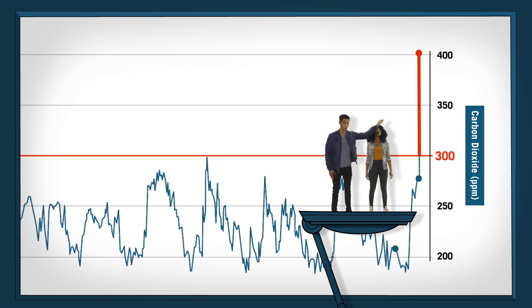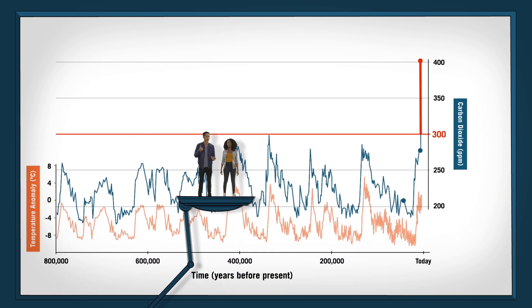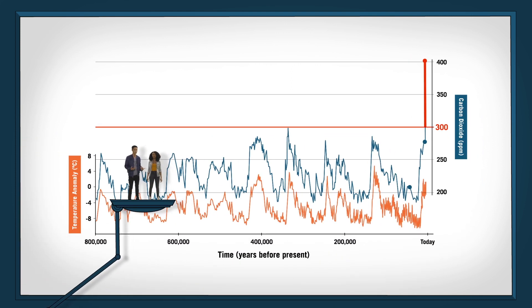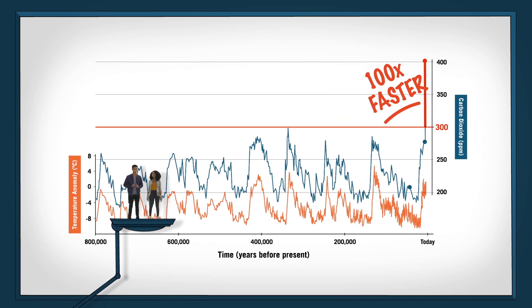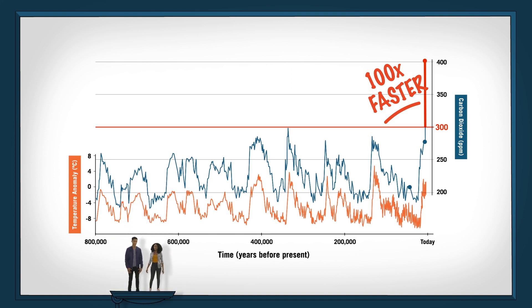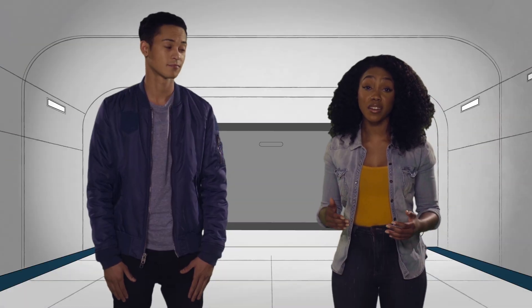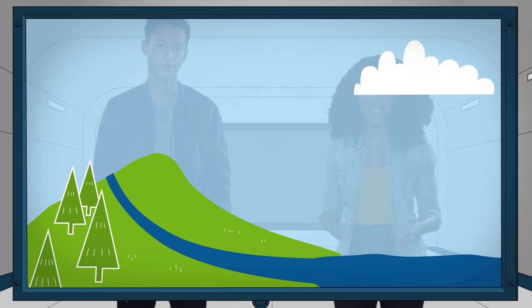Right here is when we started burning fossil fuels. You see how carbon dioxide levels are going through the roof and they're still climbing. Compared to the last 800,000 years, we're now emitting CO2 100 times faster than ever measured before.